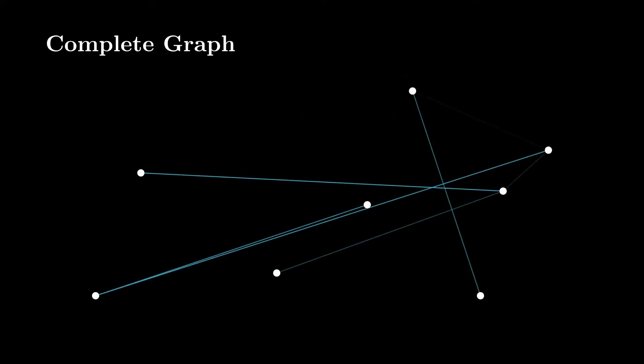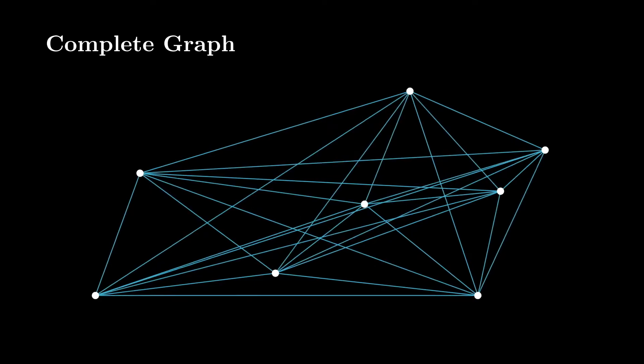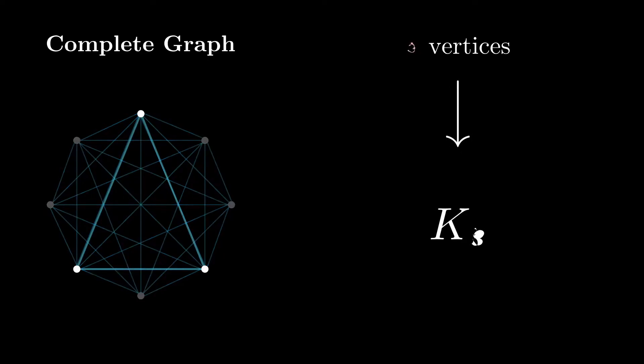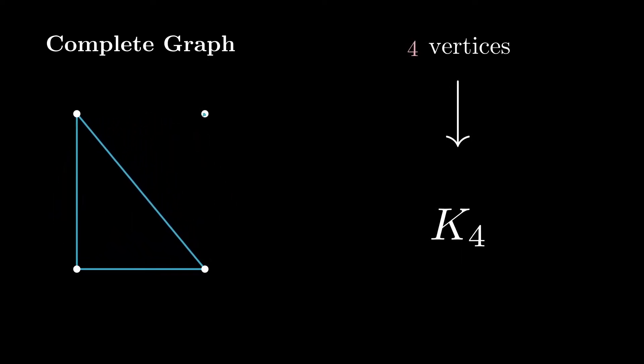We start with the graph theory. A complete graph is simply what you get by taking vertices and joining all pairs of points. If it has n vertices, we say it has order n and is labelled kn. So k3 would be a triangle, k4 would be this object, and so on.